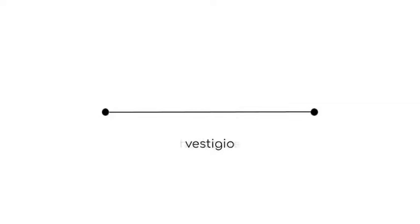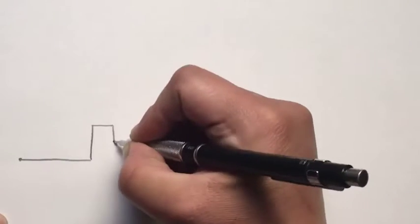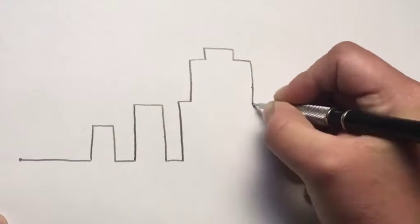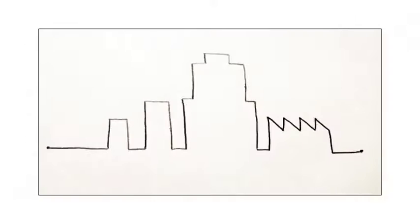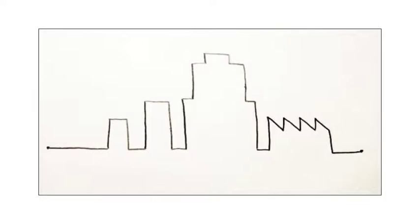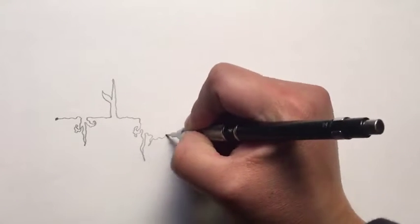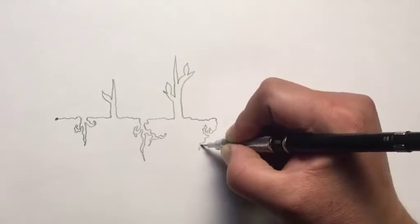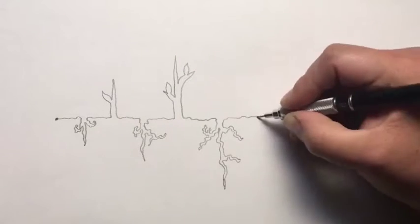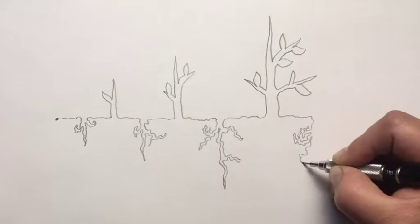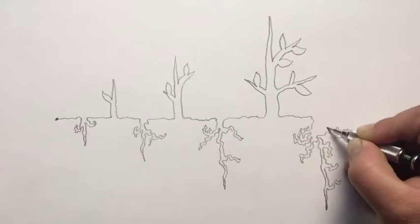Simboliza el horizonte, orden y planitud. Un conjunto de formas rectas nos recuerdan la ciudad y lo artificial, construcciones humanas que surgen de la racionalidad. Otras formas, las orgánicas, nos recuerdan la naturaleza y la vida que crece. Sistemas abiertos, permeables, biología y humanidad.